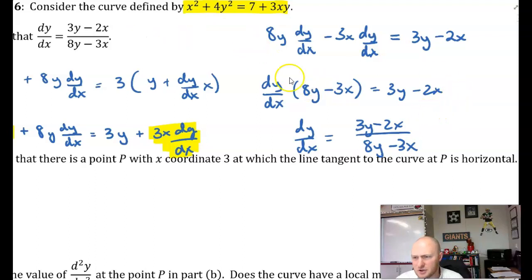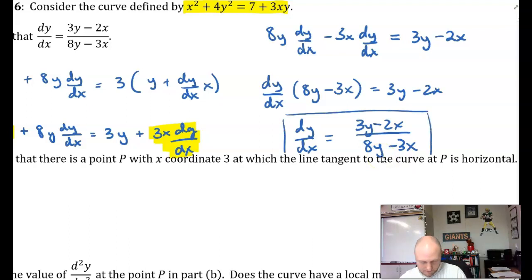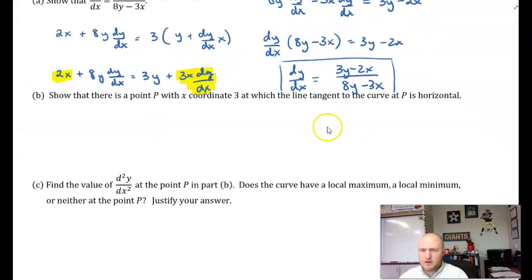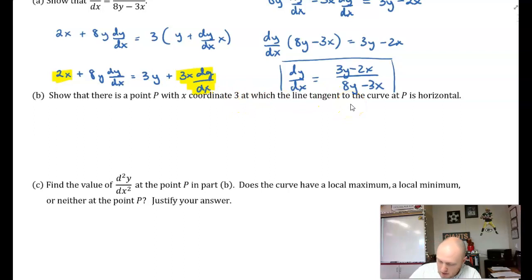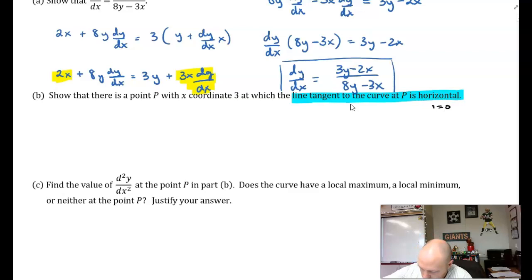We have shown that the first derivative matches. For part B, they say show that there is a point P with x-coordinate 3 at which the tangent line to the curve at P is horizontal. When the tangent line is horizontal, the slope is 0 — that is, dy/dx equals 0.